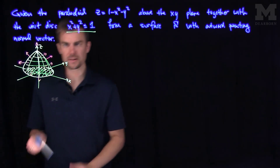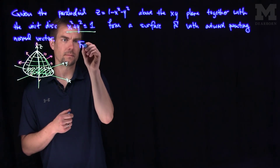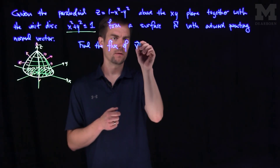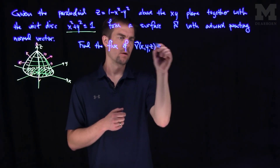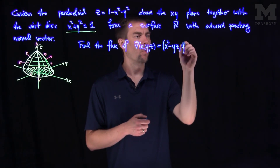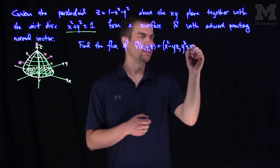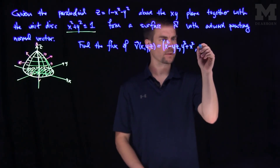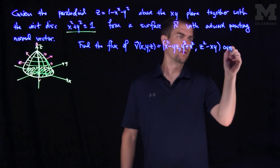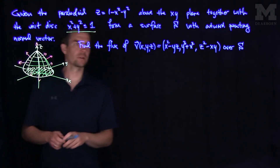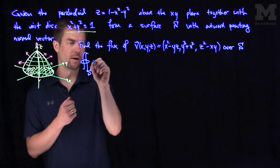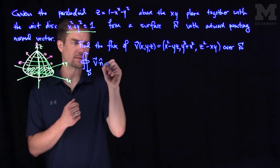So there's our outward-pointing normal vector. Let's find the flux of the vector field V of x, y, z, which is x squared minus y times z, then y cubed plus x squared, and finally z squared minus xy, over S. So what we're asked to find is the surface integral of V dot n-hat d sigma.